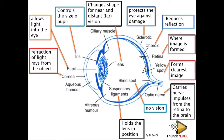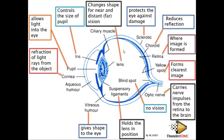The suspensory ligaments hold the lens in position. These small thread-like structures hold the lens so that it stays in the correct place within the eye.